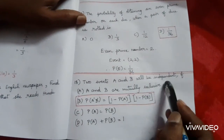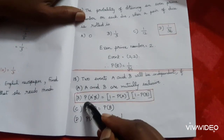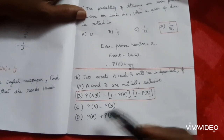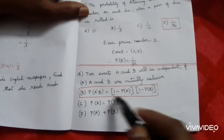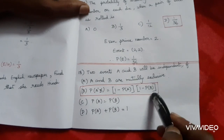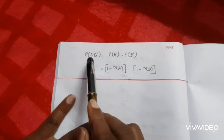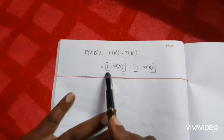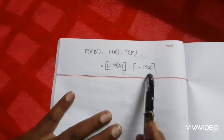Next: Two events A and B will be independent if they are mutually exclusive. P(A' intersection B') equals 1 minus P(A) into 1 minus P(B). Also P(A) equals P(B), and P(A) plus P(B) equals 1. The answer is option A: P(A' intersection B') equals [1 minus P(A)] into [1 minus P(B)], since P(A' intersection B') equals P(A') into P(B') for independent events. The answer is option A.